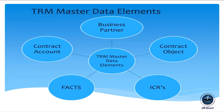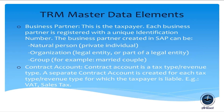The main master data elements of TRM are: BP (Business Partner), CO (Contract Object), CA (Contract Account), Facts, and ICRs. The Business Partner represents the taxpayer and is registered with a unique identification number. Every taxpayer is required to have a BP.